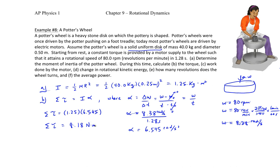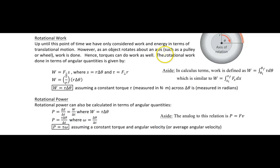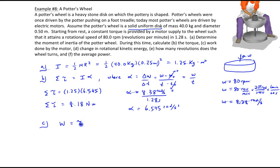The sign is left positive, assuming the wheel accelerates in the counterclockwise direction. Moving on to part C, we need to find the work done by the motor. Rotational work equals torque multiplied by the angular displacement. We already know the torque is 8.18 newton·meters, so we just need to find delta theta.